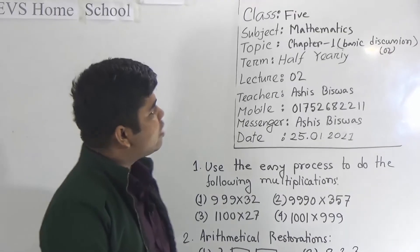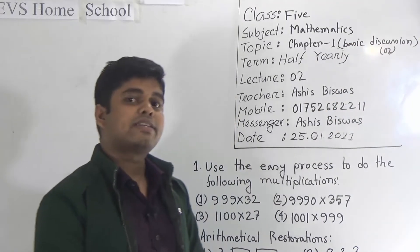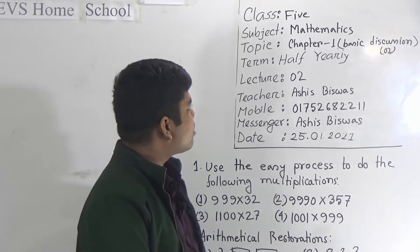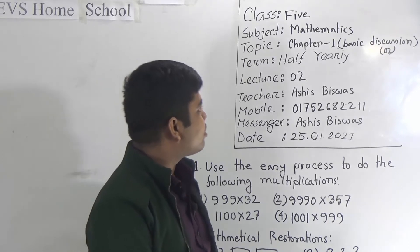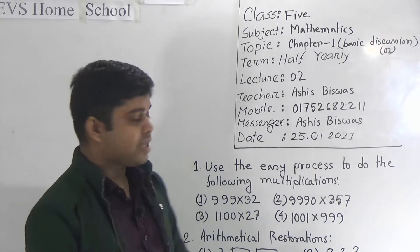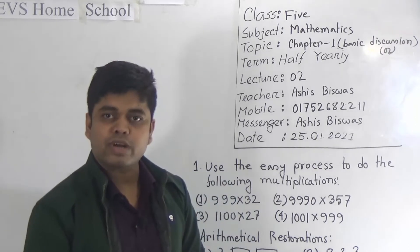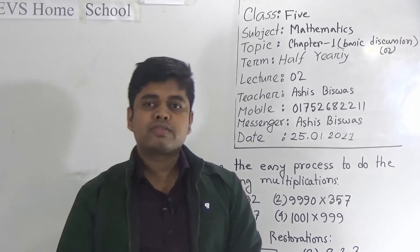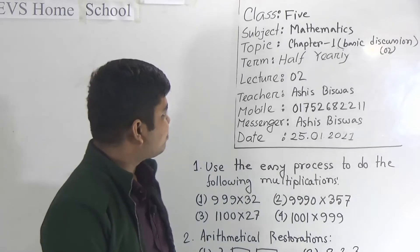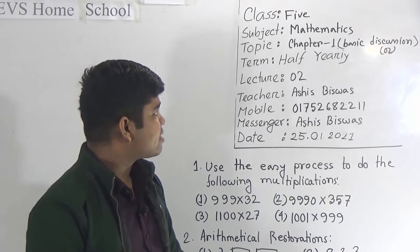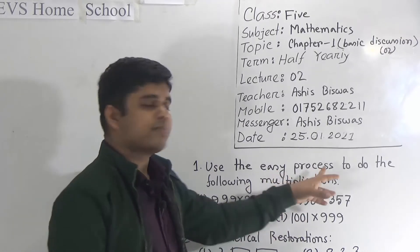In Part 1, we discussed the basic discussion of Chapter 1. In that lecture, we solved some problems and we have already learned what is multiplication, what is multiplicand, what is multiplier, and what is product. We also found some formulas: product equals multiplicand multiplied by multiplier.